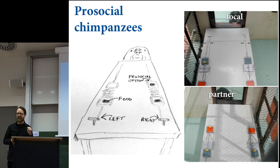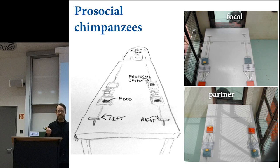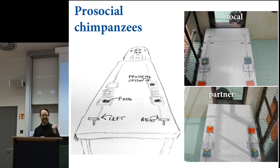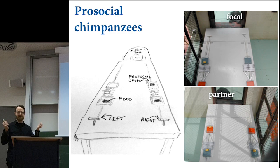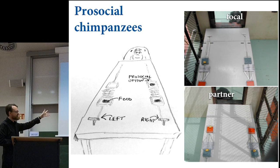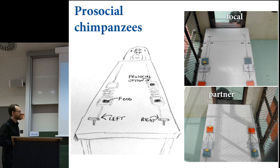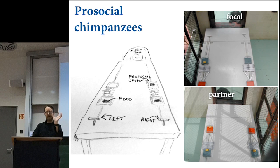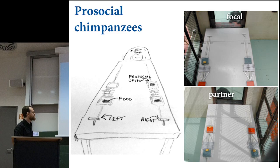This experiment asks whether chimpanzees, at no cost to themselves—it's equally costly to pull both levers—would prefer to help the other individual while they help themselves. If you do this with human kids, they nearly always pull the pro-social option. But these experiments don't tell us whether chimpanzees care about conspecifics—they tell us whether they care in a context in which humans do. This is a context heavily moralized for human participants. And as you'll see, chimpanzees don't make a distinction.